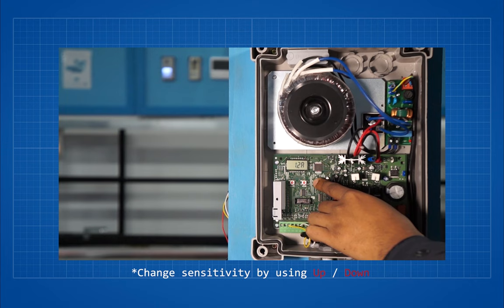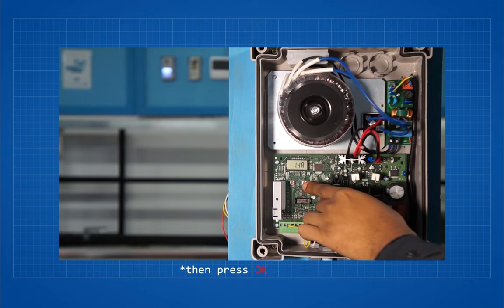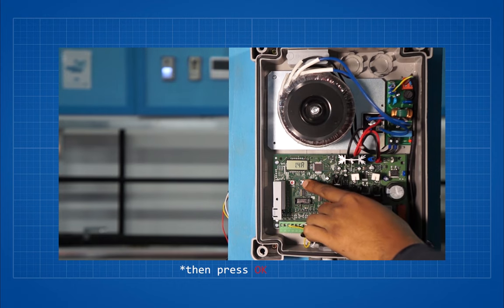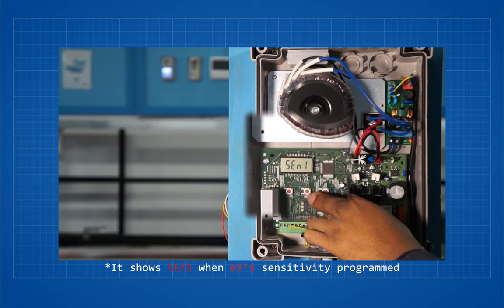Then increase the sen1 value by 0.2 amps, then press ok. Once pressed, ok display shows sen1.